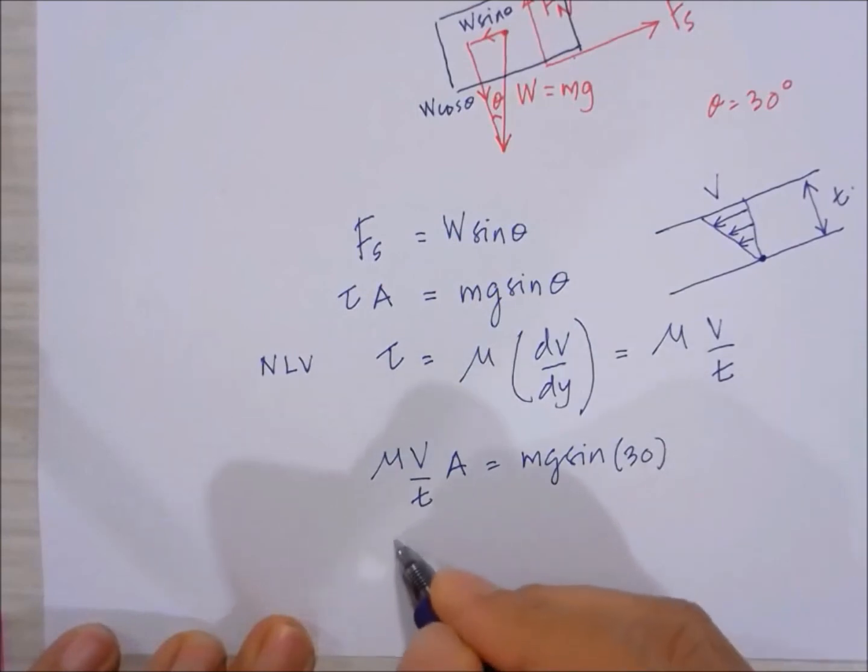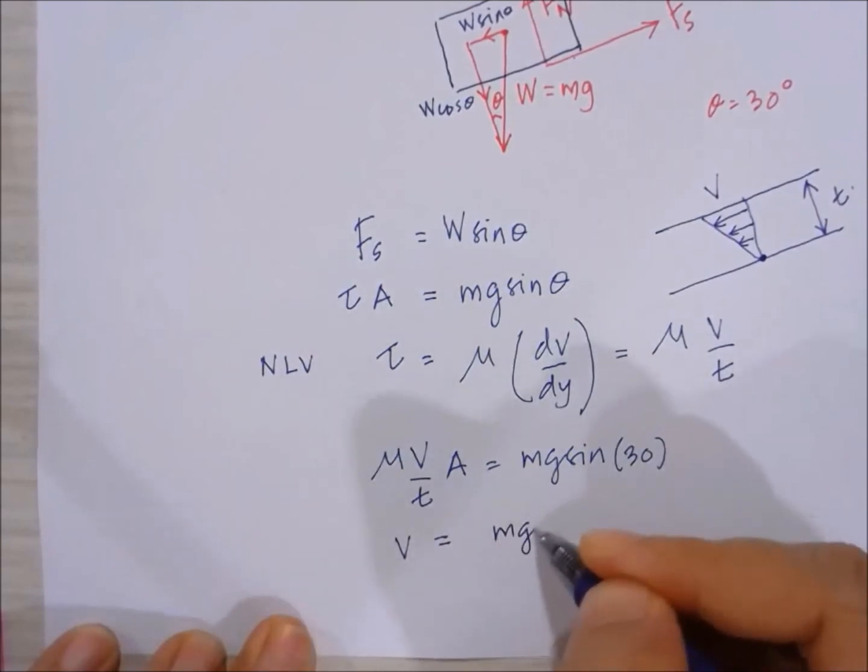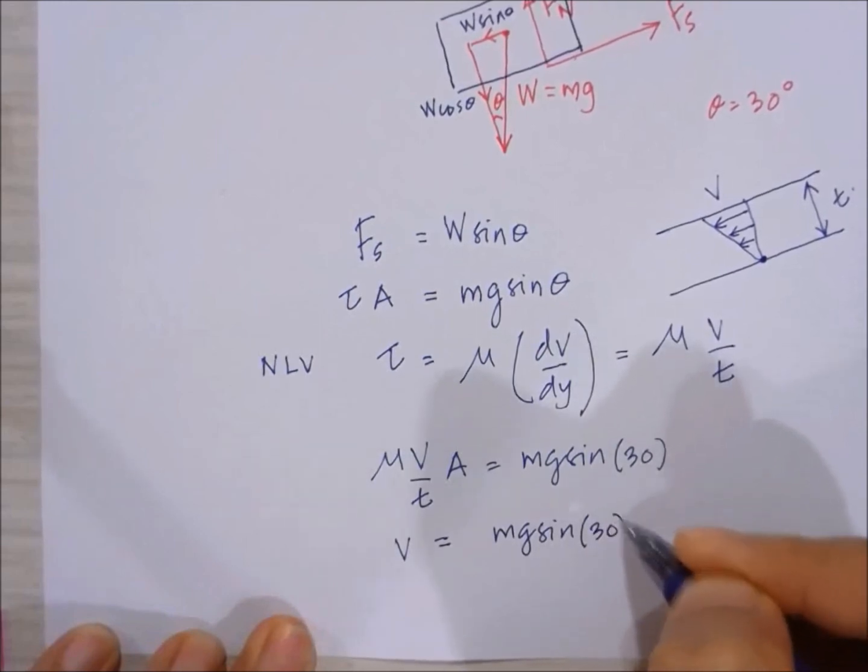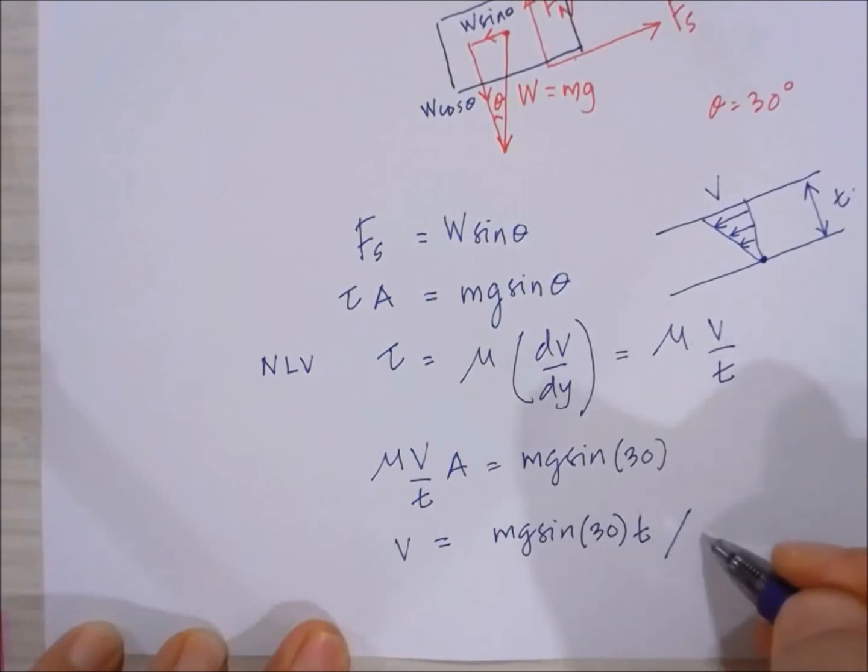So v is just equal to mg sin theta times t divided by A mu.